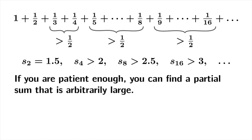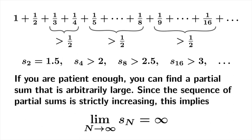So if you're patient enough, you can find a partial sum that is arbitrarily large. And clearly the sequence of partial sums is strictly increasing. And what this means is the limiting value as n goes to infinity of the sequence of partial sums has to diverge to infinity.